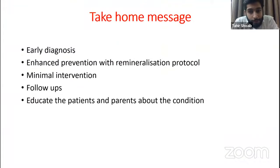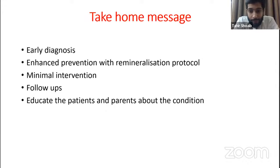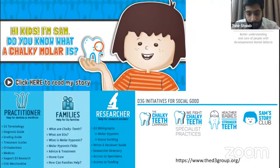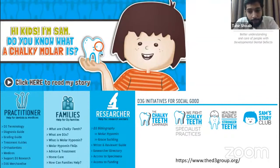To finish this all off, I'd say early diagnosis, enhanced prevention, and the REMIN protocol — this really is the key. Three to four monthly follow-ups is also the key, so that we can take early intervention if required, along with educating the patients and the parents about this condition. I strongly recommend that all parents and practitioners, as well as those involved in research, go and visit the D3 Group page. It's an Australian website that has a whole wealth of information on MIH and on other dental defects as well, and it can really serve as a very good tool to educate both the parents and the children.